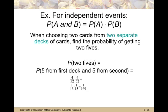Let's look at independent events. When choosing two cards from two separate decks, find the probability of getting two fives. There are four fives — the five of clubs, five of hearts, five of spades, and five of diamonds — out of the 52 cards in each deck. So it's four out of 52 times four out of 52, which reduces to one-thirteenth times one-thirteenth, giving us one over 169.